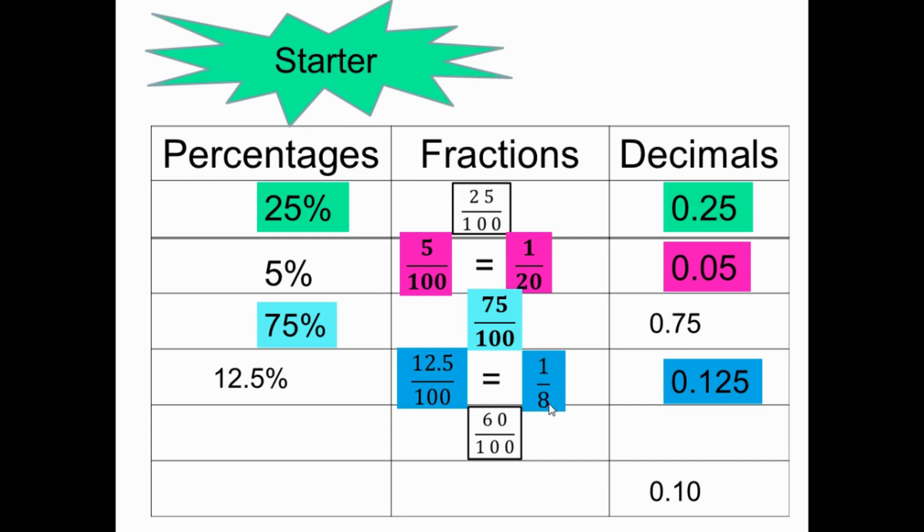60 over 100: the percentage is 60%, the decimal is 0.60. For 0.10 - the fraction is 10 over 100, percentage is 10%. When you simplify 60 over 100, divide by 10 to get 6 over 10, then by 2 to get 3 over 5.